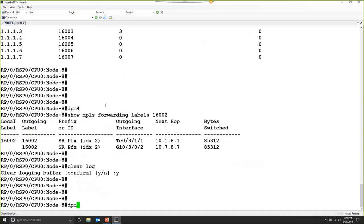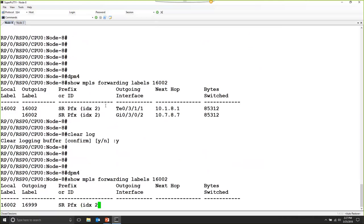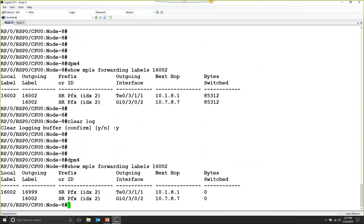Let's have a look at the error that we just introduced. Here we are. So the outgoing label for the first IGP path towards interface 0, 3, 1, 1 is now using a corrupted label value of 16,999.